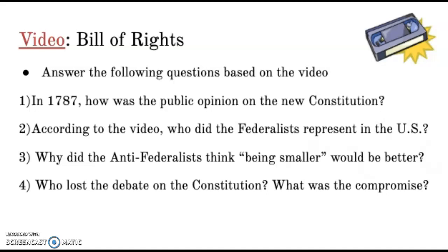Remember, this is a two-day lesson, so if you're overwhelmed in other classes, you have two days — but it is due Wednesday, so make sure it's done. The four questions are: In 1787, what was the public opinion on the Constitution? According to the video, who did the Federalists represent? Why did Anti-Federalists think being small would be better? And who lost the debate on the Constitution and what was the compromise? Federalists and Anti-Federalists will be on that exam, so take your notes.